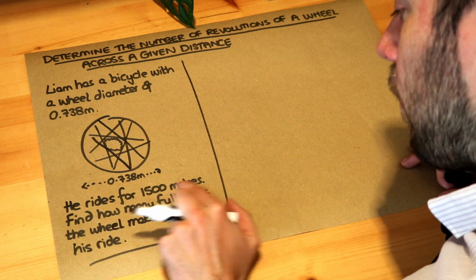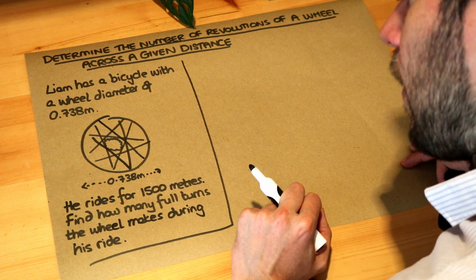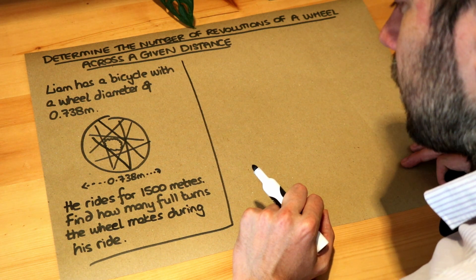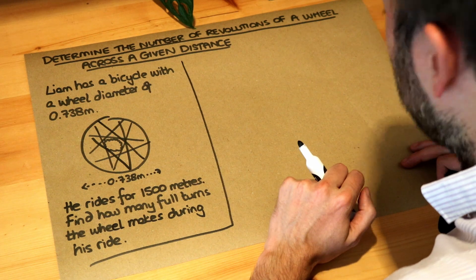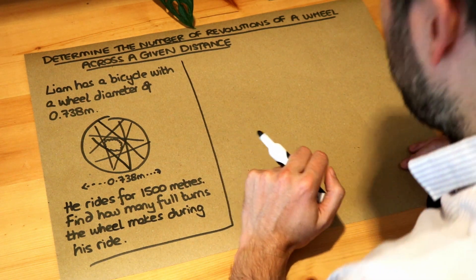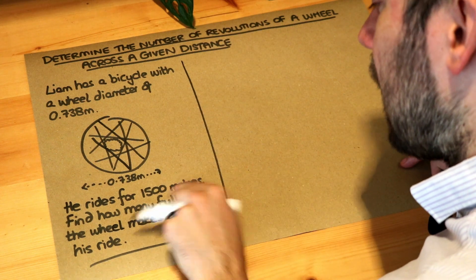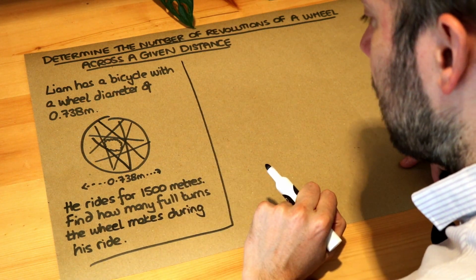He rides for 1500 meters. Find how many full turns the wheel makes during his ride. And sorry about the really badly drawn wheel. We want to see how many times the wheel spins around as you cycle across 1500 meters.